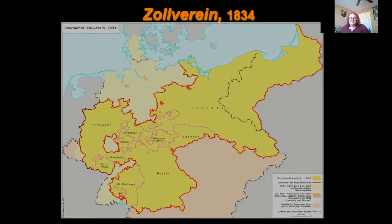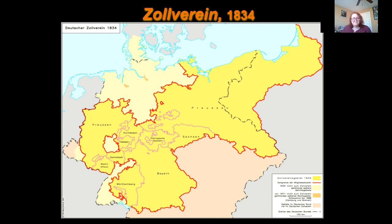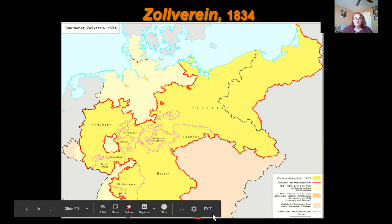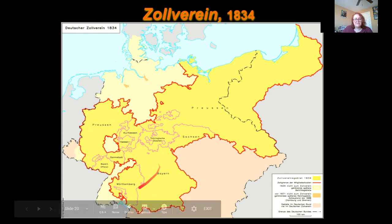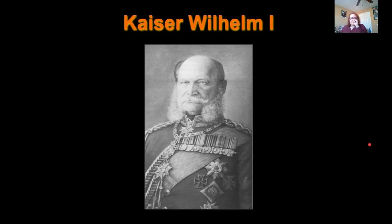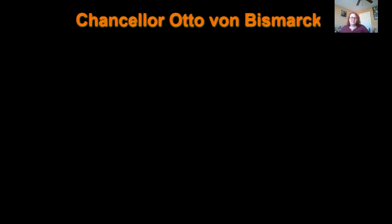Now let's talk about German unification. The precursor to this would be the Zollverein in 1834 — a German customs union led by Prussia, created to stimulate trade and increase revenues. There were no tariffs on products traded between member states. All German states, except for Austria, were members by 1853. Economic unity kind of trumped political unity in this instance.